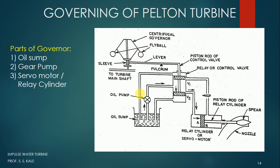The next part is the servo motor or relay cylinder, which is the total cylinder-piston arrangement. In this arrangement there is a piston and a piston rod, called the piston rod of the relay cylinder. This piston rod is connected to a spear, which is inserted into the nozzle. From the nozzle, water goes to the turbine. Basically, controlling the speed of the Pelton turbine means controlling the amount of water going to the turbine. If you reduce the water going to the turbine, the rotation reduces; if you increase it, the rotation increases.